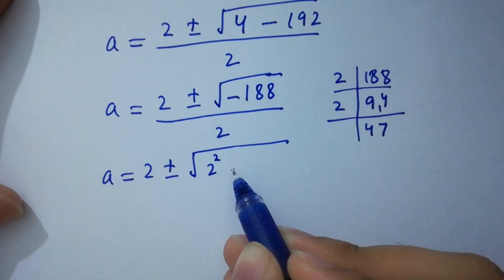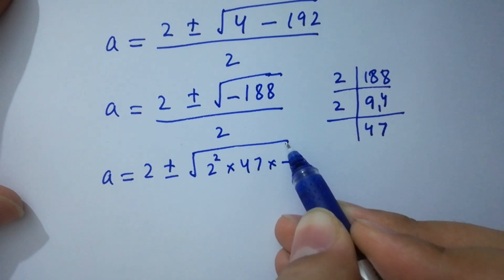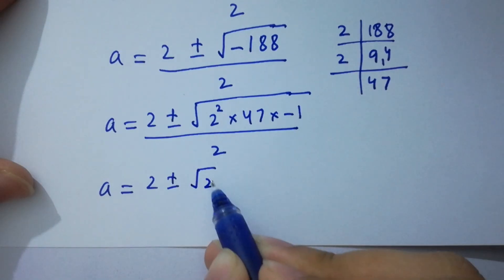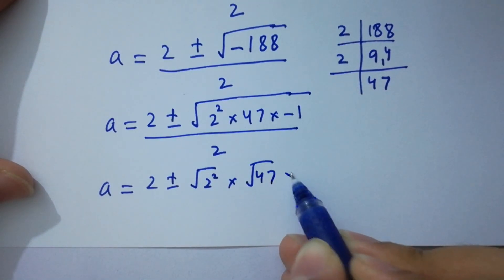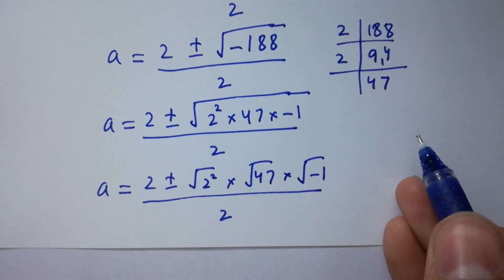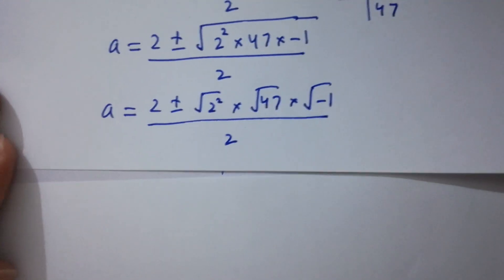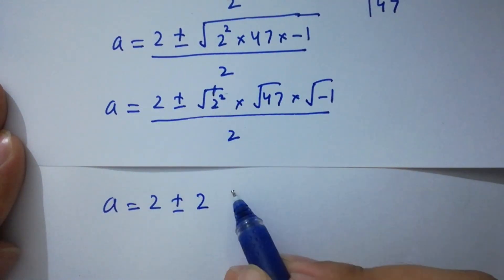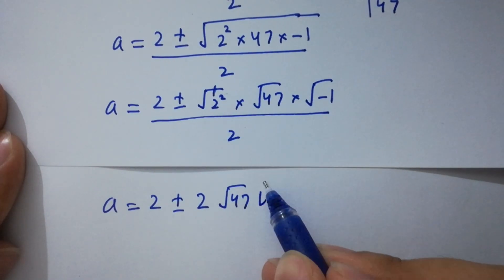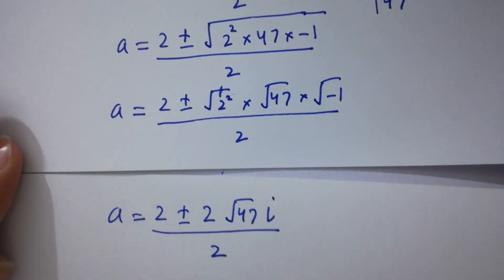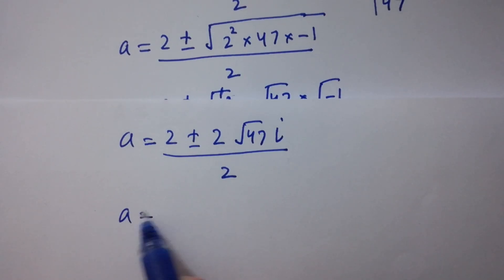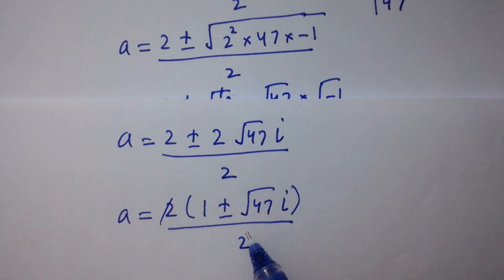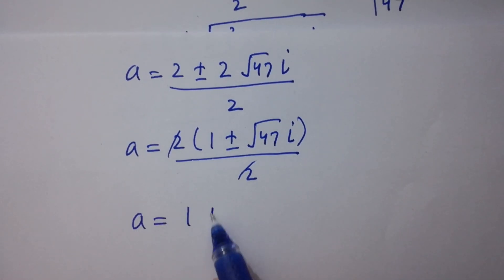We have a equals 2 plus or minus square root of minus 188 over 2. Since minus 188 equals 2 squared times 47 times minus 1, this becomes 2 plus or minus square root of 2 squared times square root of 47 times square root of minus 1, over 2. Since square root of minus 1 is i from complex numbers, we simplify: the 2 cancels, giving a equals 1 plus or minus square root of 47 times i.